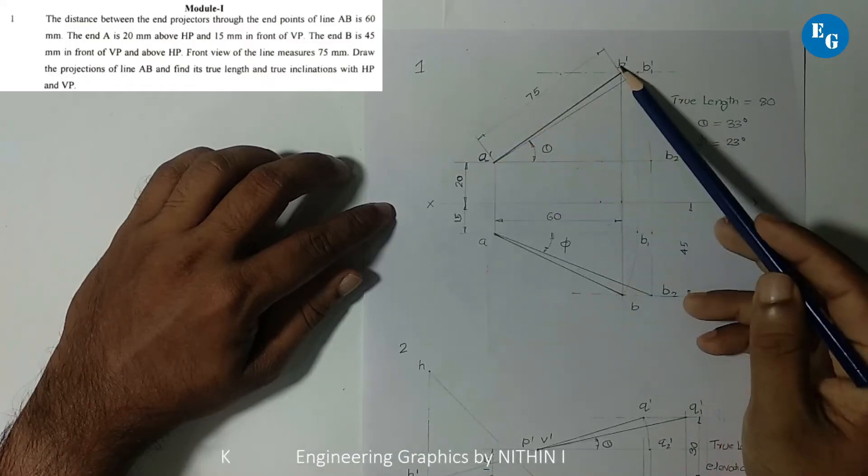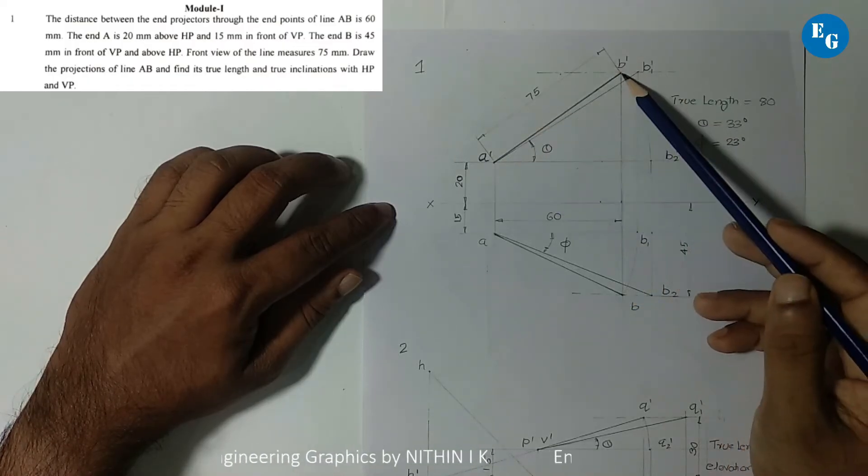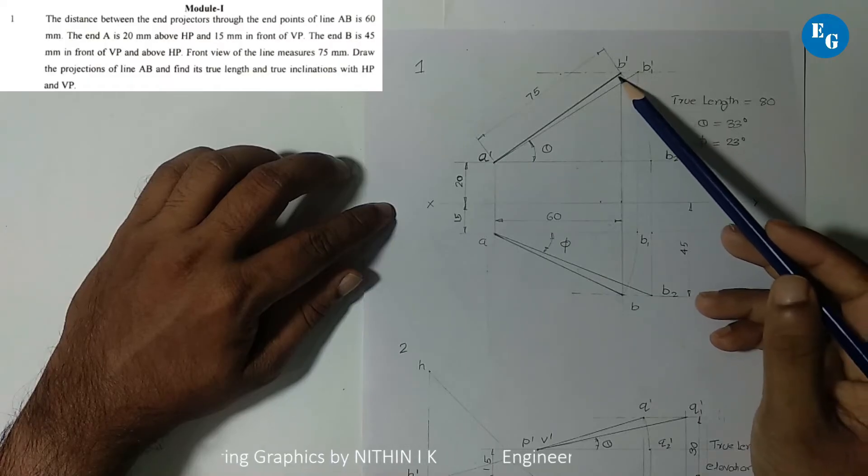Front view of the length is 75 mm. AB-75 is located. B2 is located.